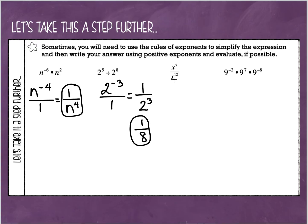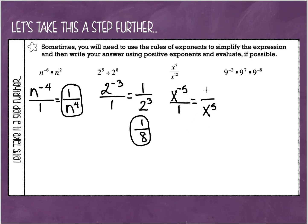Our next example: we have x to the 7th divided by x to the 12th, so we keep our base and subtract our exponents — that gives us negative 5. I do not want a negative exponent, so let's make it a fraction. Since my negative 5 is in the numerator, I move it to the denominator to make it positive 5, then put a 1 as my placeholder in the numerator. My simplified expression is 1 over x to the positive 5th.